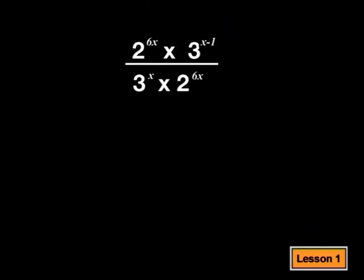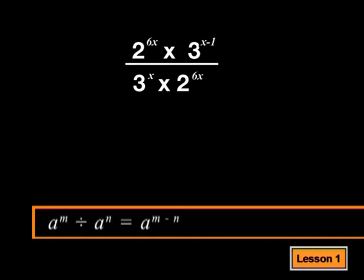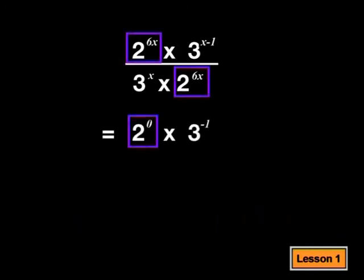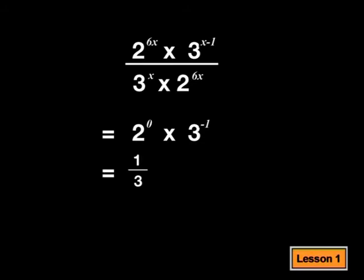Now, you can apply the second law. If you divide like bases, you subtract the powers. 6x minus 6x is 0, giving us 2 to the power 0. x minus 1 minus x is minus 1, leaving us with 3 to the minus 1. 2 to the power 0 is 1, and 3 to the negative 1 is a third. So, the answer is 1 over 3.